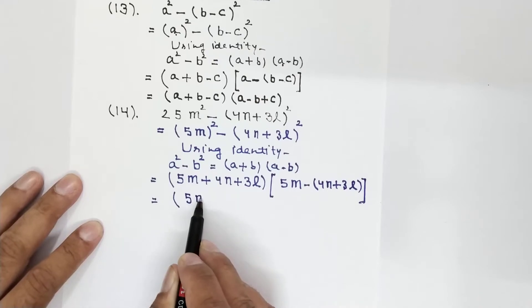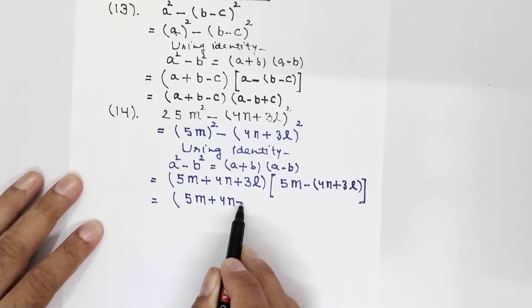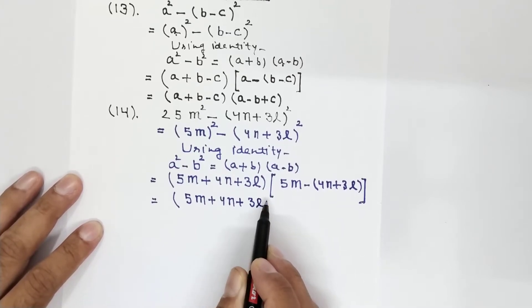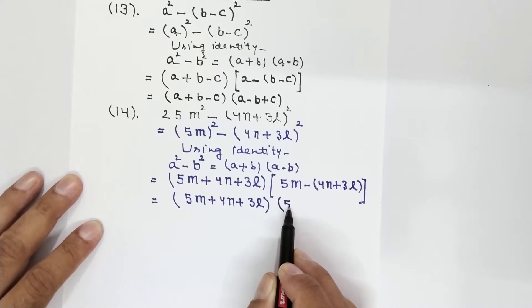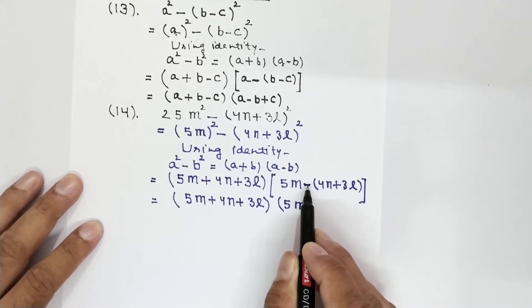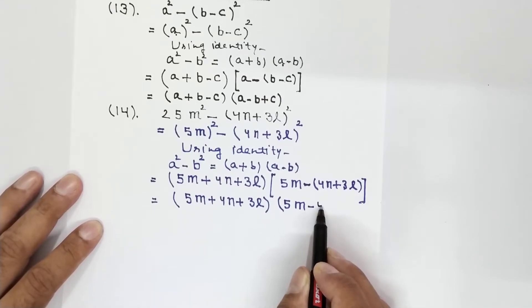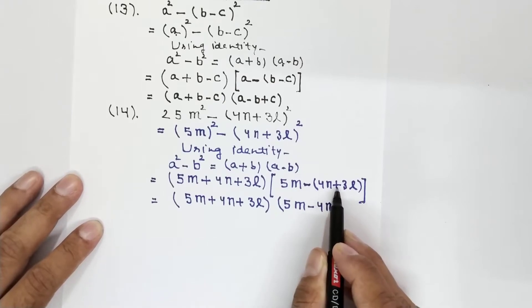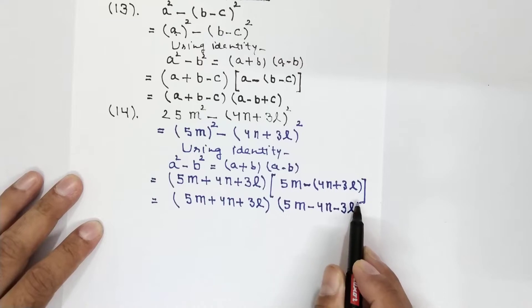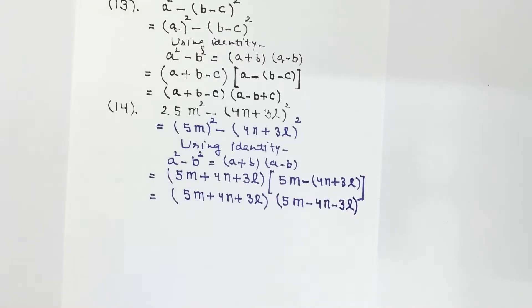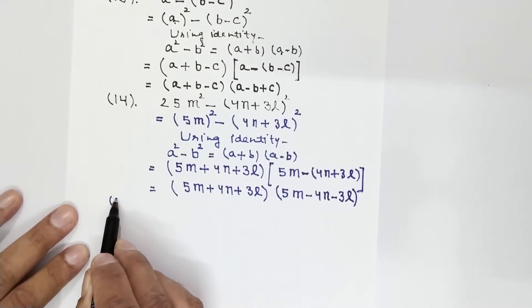So expanding: (5m plus 4n plus 3l) — now the square bracket changes to small bracket, 5m, and since there is a minus outside the bracket, all signs inside change: minus 4n minus 3l. So this was the factorization of question number 14.